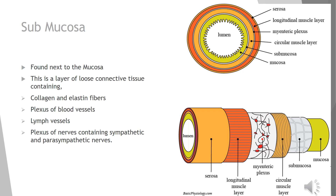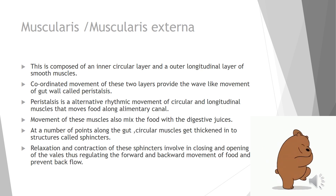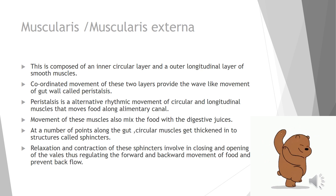The submucosa is found next to the mucosa and is a layer of loose connective tissue. This loose connective tissue contains collagen and elastin fibers, a plexus of blood vessels, lymph vessels, and a plexus of nerves containing sympathetic and parasympathetic nerves. These contents are clearly visible in the diagram.